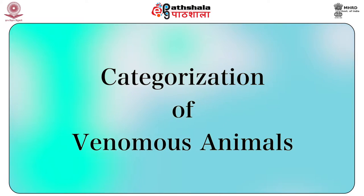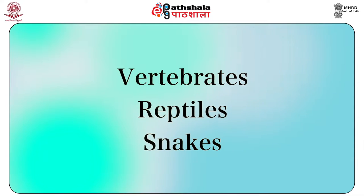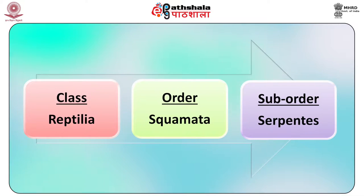Starting with the categorization of venomous animals: several species of animals with or without backbones produce venoms or contain certain toxins that may be dangerous to humans, either externally by stinging, biting, or by ingestion. First, starting with the vertebrates — reptiles — we will study about snakes. Snakes belong to class Reptilia, order Squamata and sub-order Serpentes. Snakes are found all over the world except in New Zealand, Ireland and in Arctic lands.